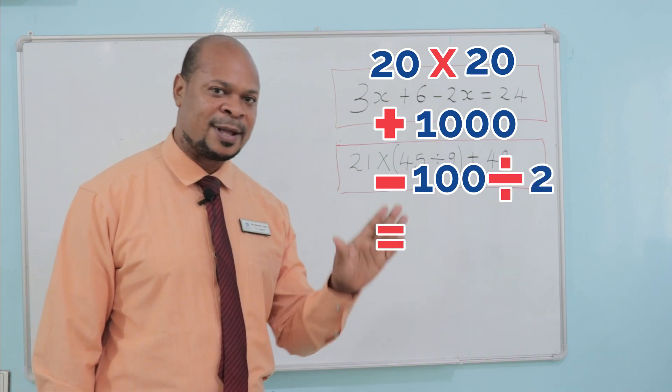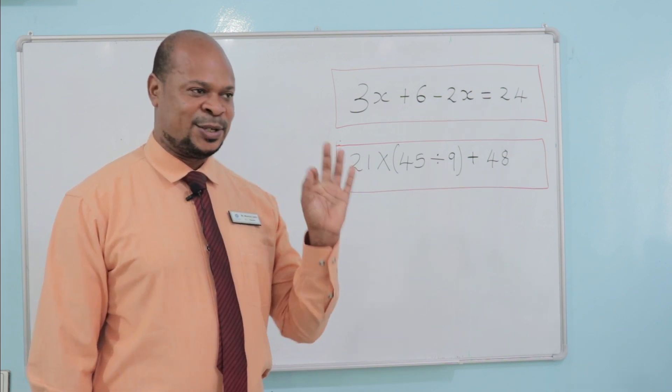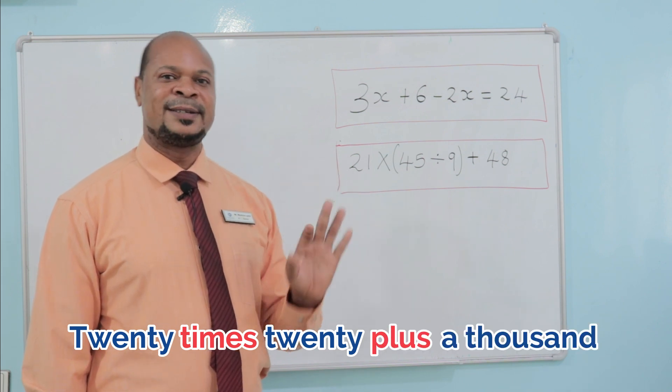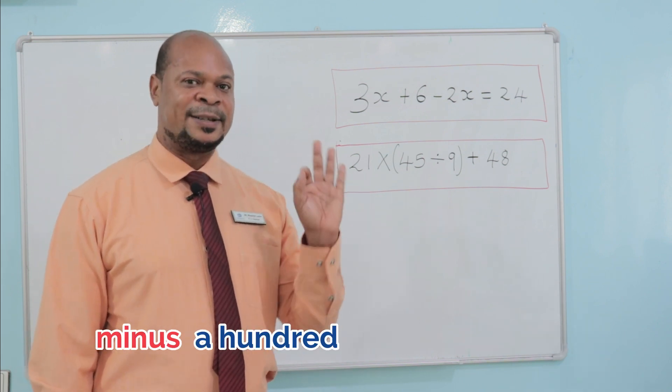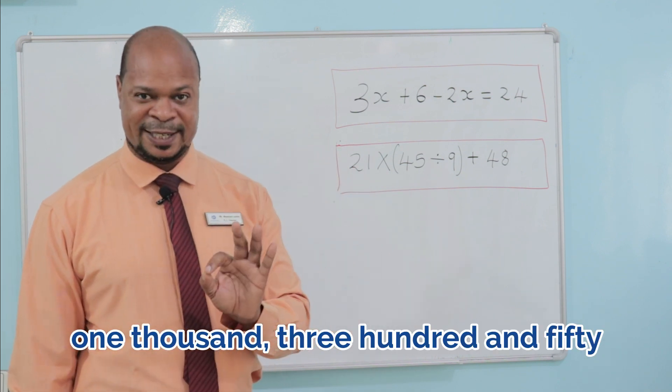Can we say it again? 20 times 20 plus 1000 minus 100 divided by 2, the answer is 1350.